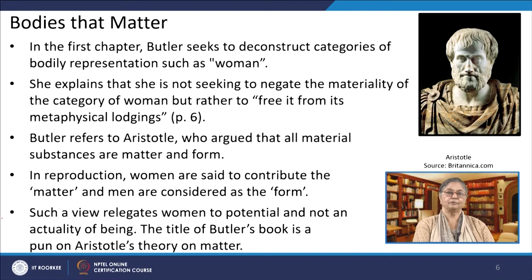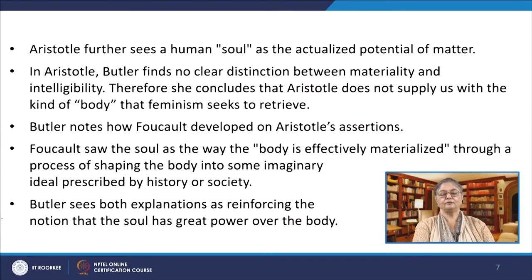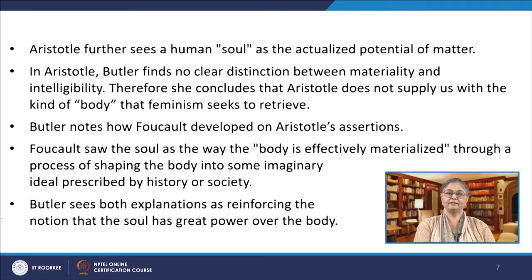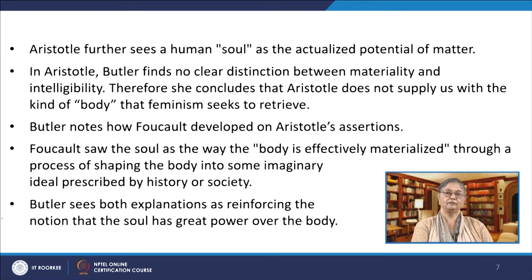In the first chapter, Butler seeks to deconstruct categories of bodily representation such as women. She explains she is not seeking to negate the materiality of the category of women, but rather to free it from its metaphysical logics. Butler refers to Aristotle, who argued that all material substances are matter and form. In reproduction, women are said to contribute the matter and men are considered the form. Such a view relegates women to potential and not an actuality of being. The title of Butler's book is a pun on Aristotle's theory on matter.